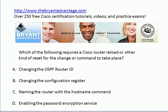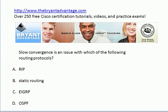Which of the following requires a Cisco router to be reloaded or some other kind of reset for the change or command to take place? Changing the OSPF RID, changing the configuration register, naming the router with the hostname command, or enabling the password encryption service? And the final question: slow convergence is an issue with which of these routing protocols — RIP, static, EIGRP, or OSPF?